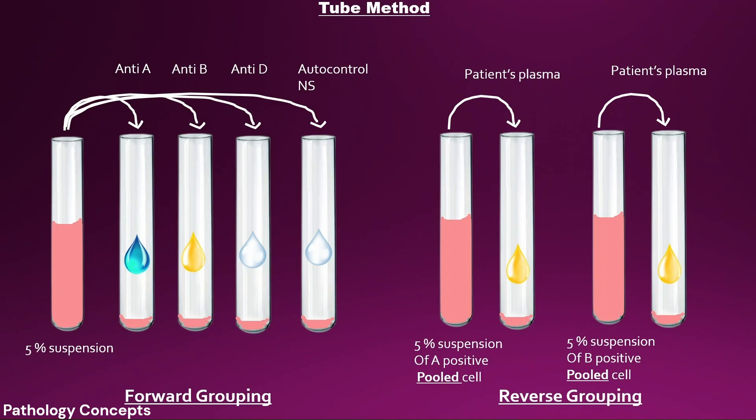Incubate at room temperature for 60 to 90 minutes or centrifuge for 15 seconds. After that, observe the agglutination macroscopically or microscopically. The forward blood group system identifies the antigens that are present on the RBC, and the reverse blood group system identifies the antibodies which are present in the patient's plasma.